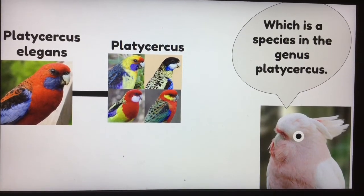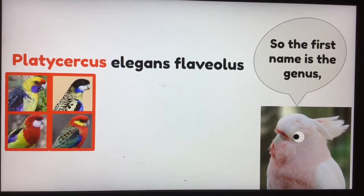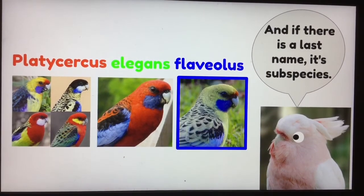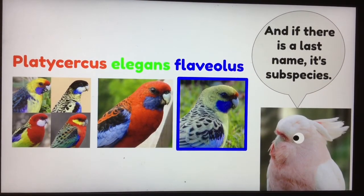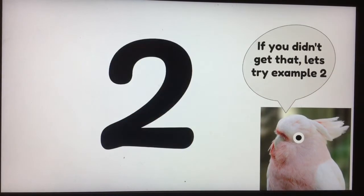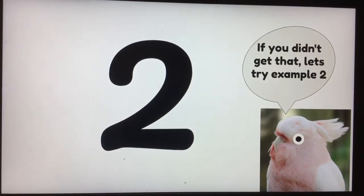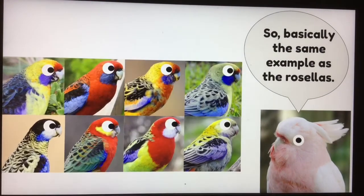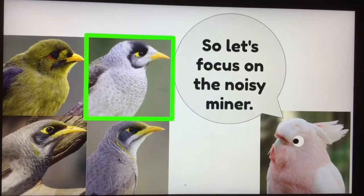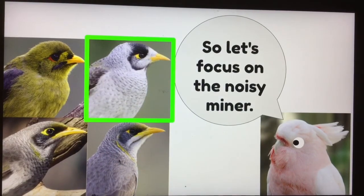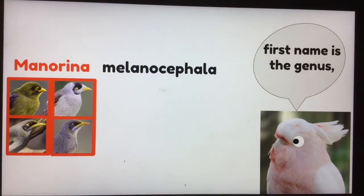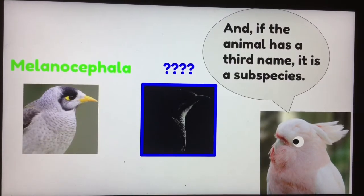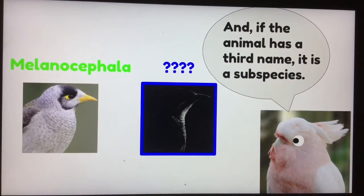So the first name is the genus, the second name is the species, and if there is a last name, it's the subspecies. If you didn't get that, let's try example two: miners. Basically the same example as rosellas — let's focus on the noisy miner. First name is the genus, second name is the species, and if the animal has a third name, it is a subspecies.